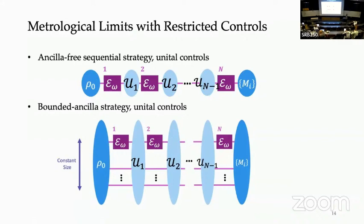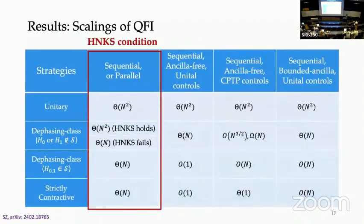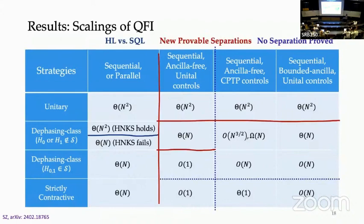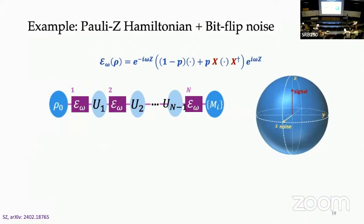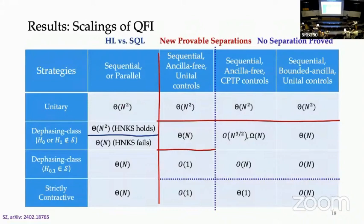Q: Do you have any closed-form expressions for the control signals? A: Since I only consider the single-qubit case, it is quite simple analytically. For dephasing-class channels, it's just a rotation along the same direction as the signal, with the angle tuned to a specific value. For strictly contractive channels, I showed the QFI is at most constant, so no sequence of controls allows you to achieve better than constant Fisher information.